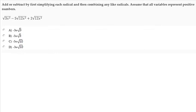Add or subtract by first simplifying each radical and then combining any like radicals. Assume that all variables represent positive numbers. The square root of 3x squared minus 5 square root of 12x squared plus 2 square root of 12x squared.